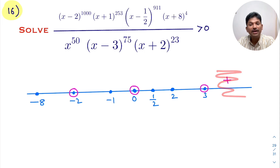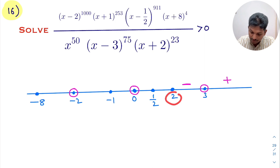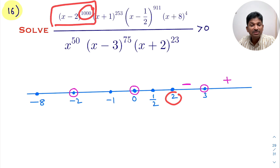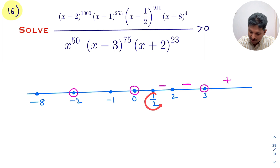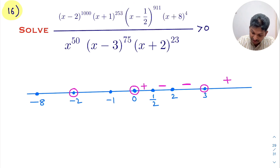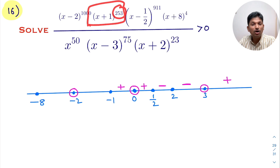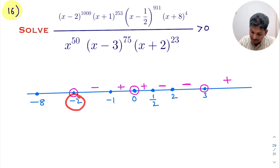Wavy curve method: keep plus in the rightmost corner. 3 has odd power — sign changes: plus to minus. 2 has even power — sign unchanged: stays minus. 1/2 has odd power — sign changes: minus to plus. 0 has even power (x^50) — sign unchanged: stays plus. -1 has odd power (253) — sign changes: plus to minus. -2 has odd power — sign changes: minus to plus. -8 has even power — sign unchanged: stays plus.